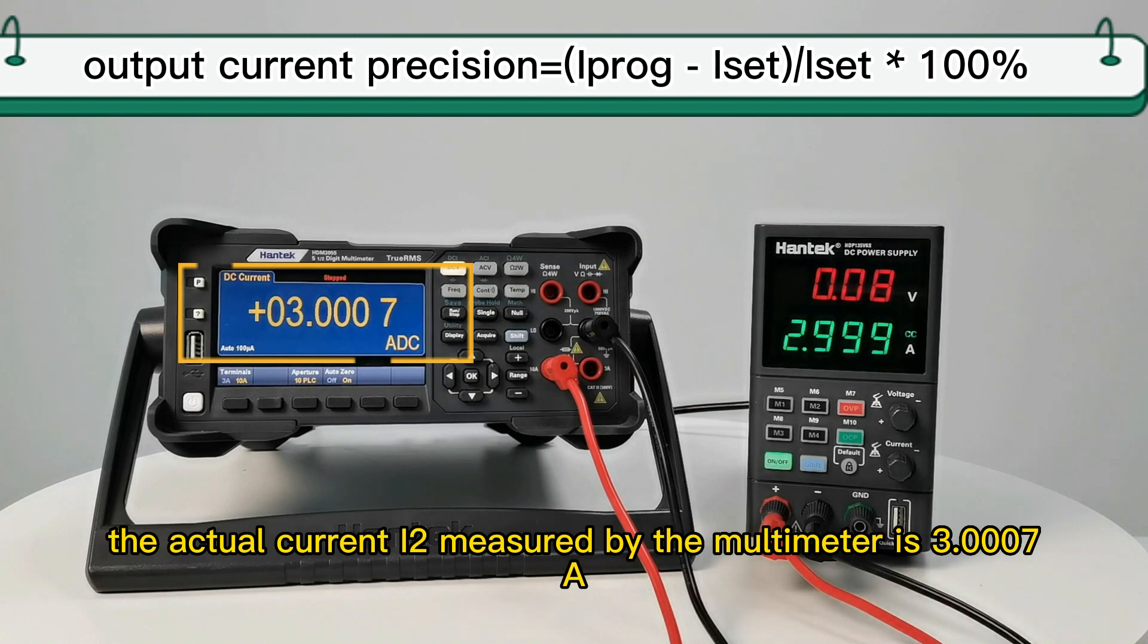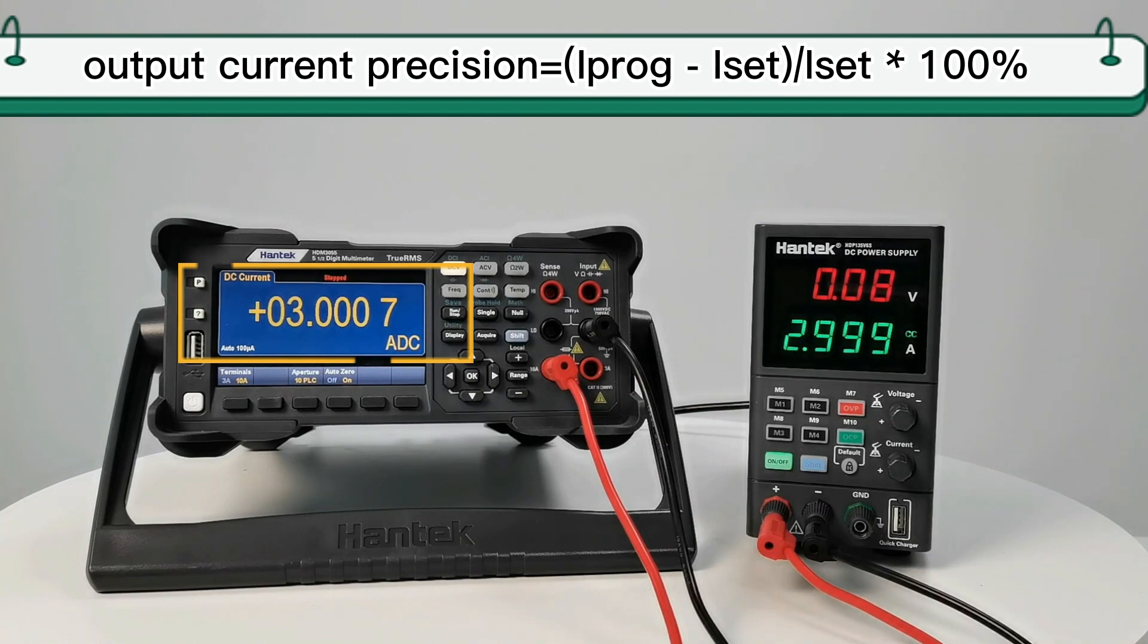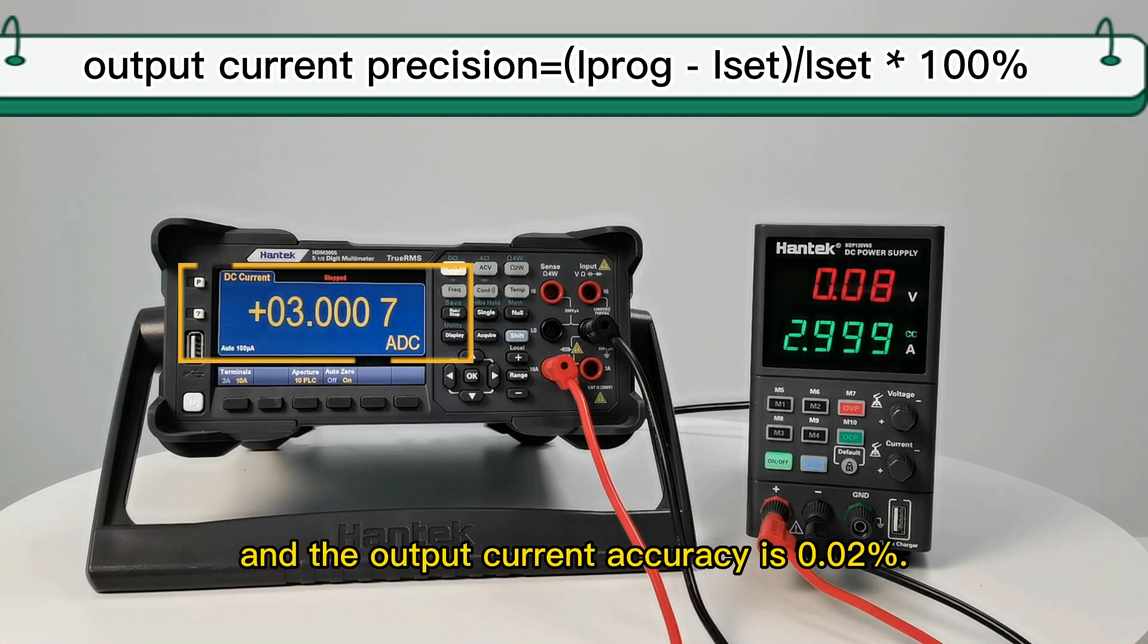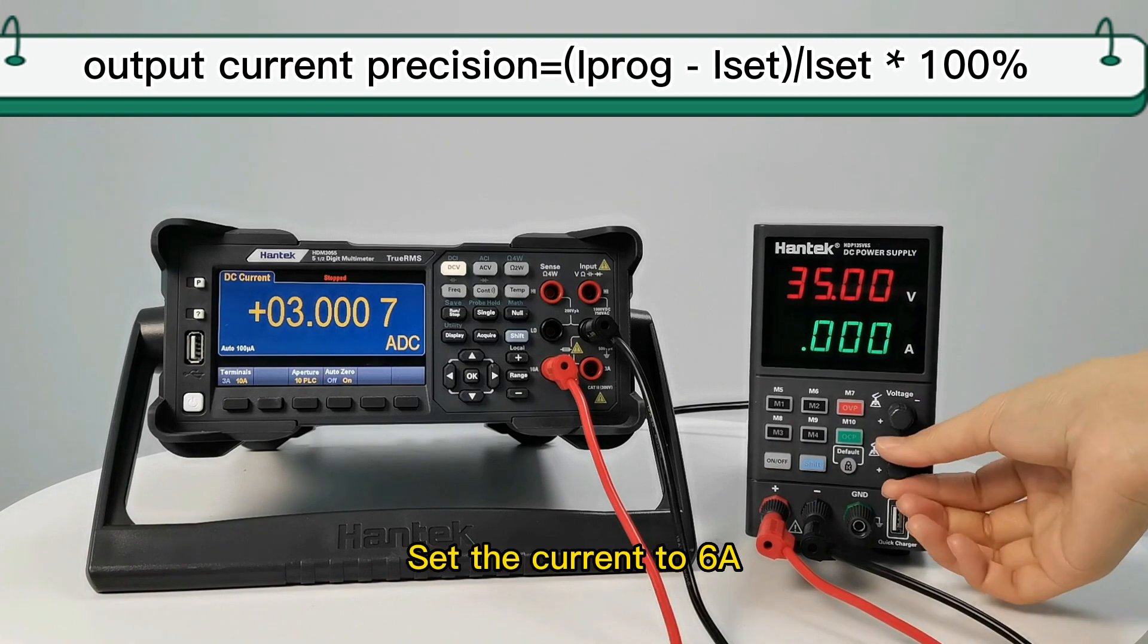The actual current I2 measured by the multimeter is 3.0007A, which is brought into the formula. The output current accuracy is 0.02%. Set the current to 6A.